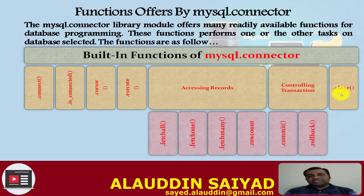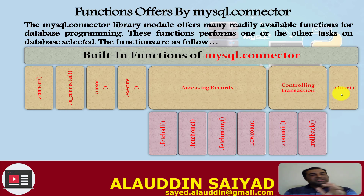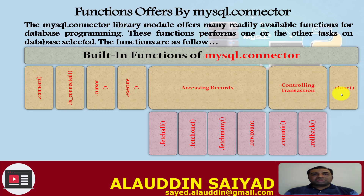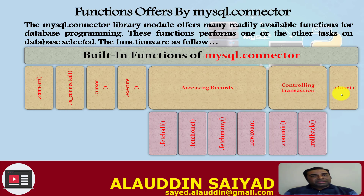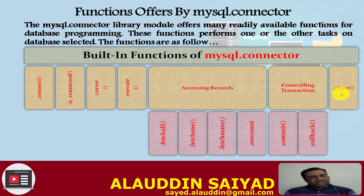We must use the commit() function after executing insert, delete, and update commands from Python to MySQL. Without commit(), changes made by the transaction will not be stored. The close() function terminates the established connection. At the end of the application, you should use close() to close the connection; otherwise, if you terminate the application, the connection will be closed automatically by the MySQL central server.